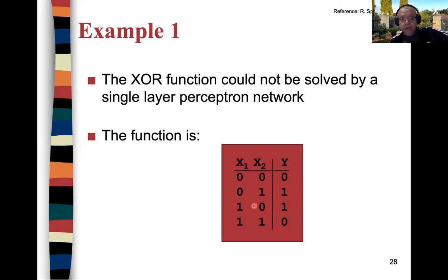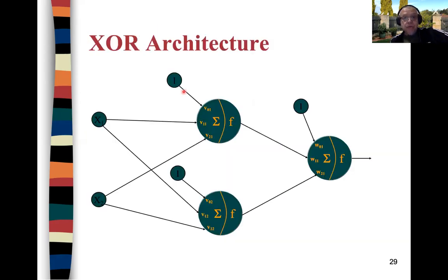When the inputs are the same the output is zero; when they're different the output is one. Our training patterns: we feed the first input pattern (0,0) with target output zero, then the second pattern (0,1) with target one. Any error is used to backpropagate and adjust the weights. We do this for one epoch, then a second epoch, until we reach convergence.